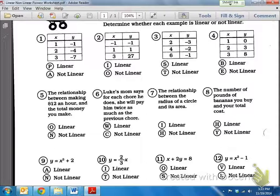So here on Numbers 1 through 4, we're given a table. And remember, usually when we're given a table, we need to find the slope, or the difference between the y's and the difference between the x's. So, let's do this for number 1.